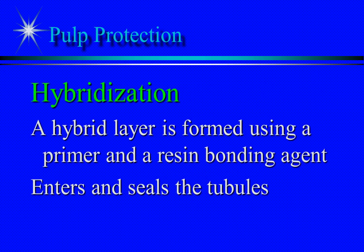Hybridization is used with all composite resin restorations. The etch-prime-bond process results in hybridization of the dentin. There is also a method where amalgam can be placed after hybridization. With hybridization, materials may be placed on both enamel and dentin.